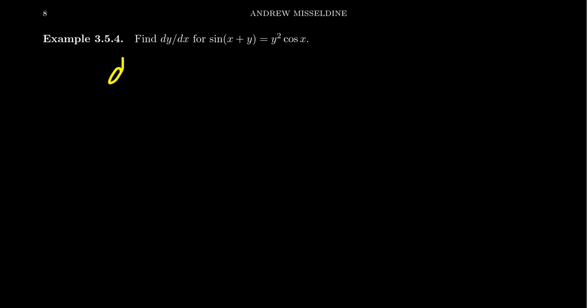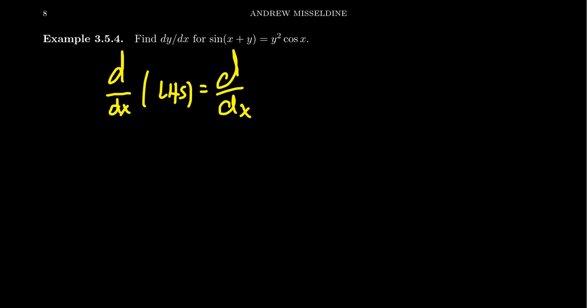To calculate the derivative implicitly, we're essentially going to take the derivative of the left-hand side with respect to x, and we also take the derivative of the right-hand side with respect to x. The idea is that if you have an equation, as long as you do the same thing to both sides, equality will be maintained. So if we take the derivative of the left and take the derivative of the right, we can solve for dy over dx.